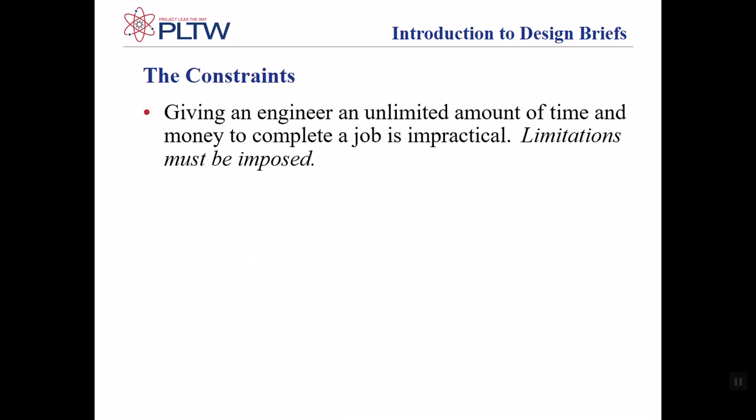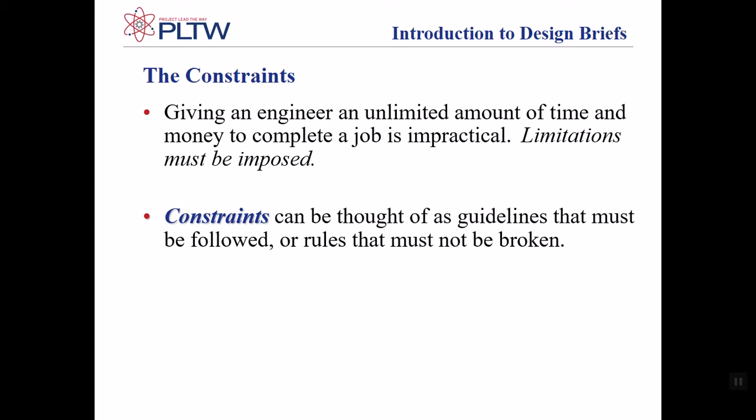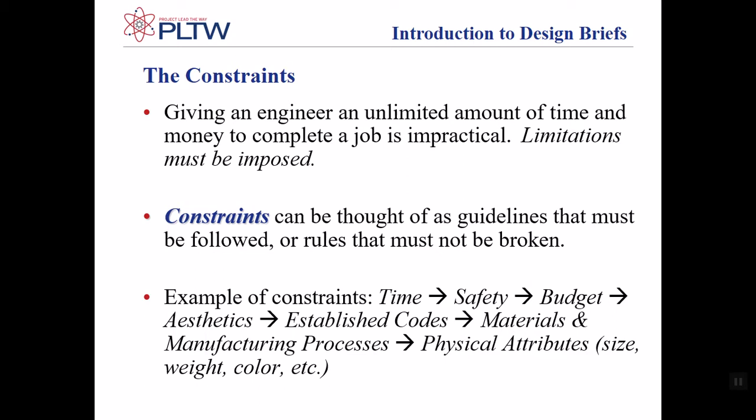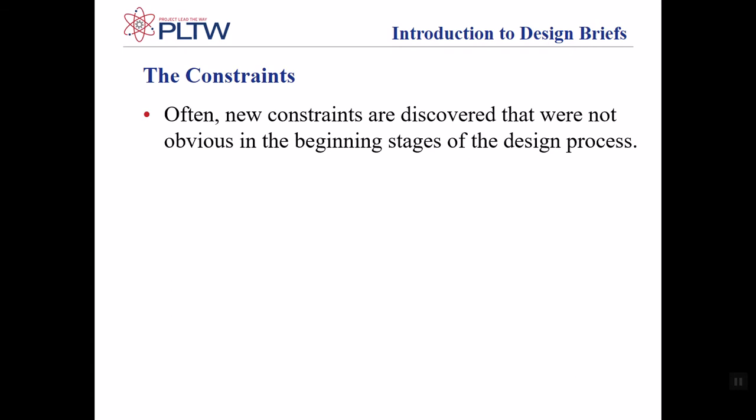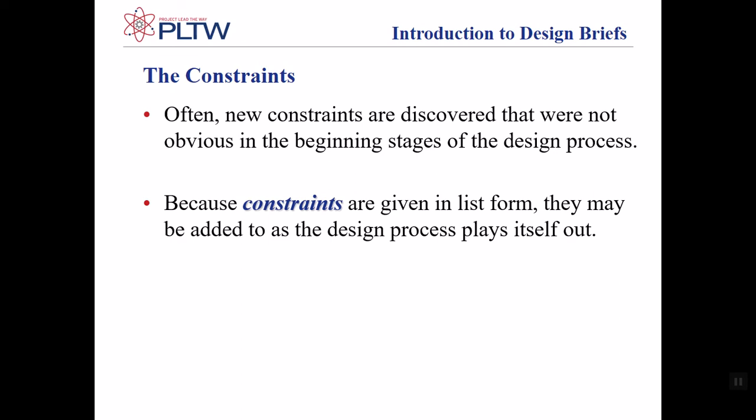Constraints: giving an engineer an unlimited amount of time or money to complete a job is not practical at all — limitations must be imposed. Constraints can be thought of as guidelines that must be followed or rules that must not be broken. For example, constraints will include time, safety, budget, aesthetics, established codes, materials, manufacturing processes, and physical attributes such as size, weight, and color. Often new constraints are discovered that were not obvious in the beginning stages of the design process. Because constraints are given in list form, they may be added to as the design process plays itself out.